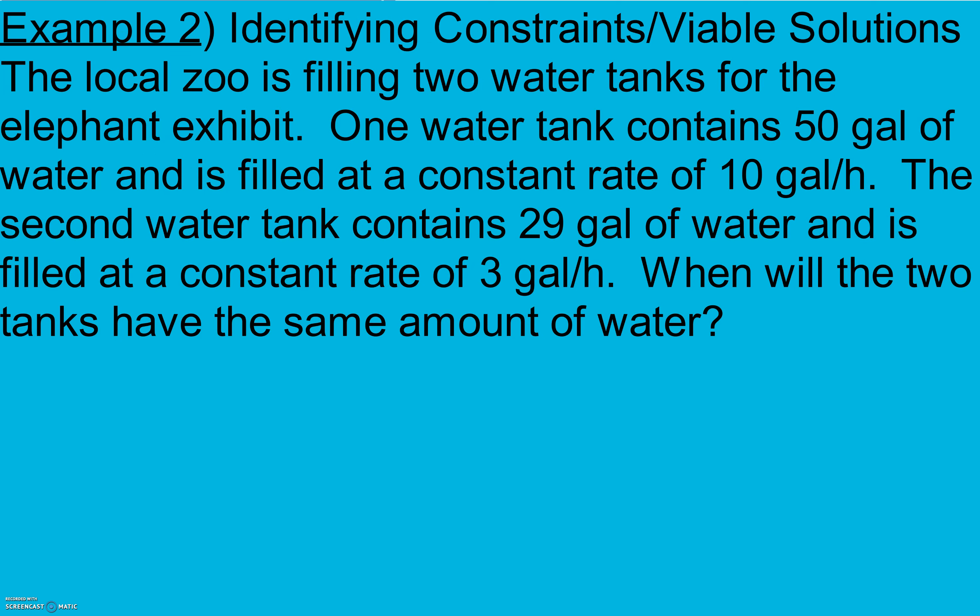Here in example two, it says the local zoo is filling two watering tanks for the elephant exhibit. One water tank contains 50 gallons of water and is filled at a constant rate of 10 gallons per hour. The second water tank contains 29 gallons of water and is filled at a constant rate of 3 gallons per hour. When will the two tanks have the same amount of water? Here we have two things we're comparing. X is going to be my number of hours that the tank is filling. And Y is going to be the number of gallons in the tank.